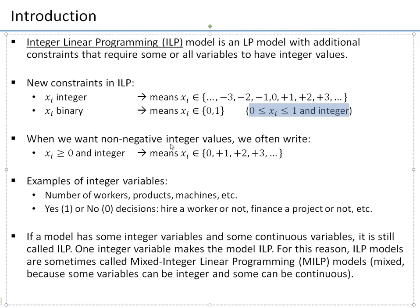Often we want non-negative integer values, so we write 'xi ≥ 0 and integer,' meaning xi can be 0, 1, 2, 3, and so on. Examples of integer variables include any number that needs to be a whole number, like a number of workers, number of products, or number of machines.